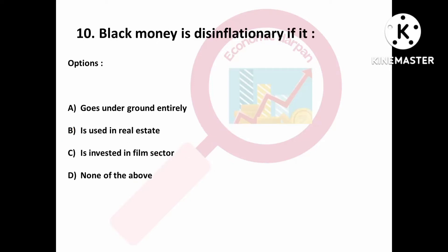Question number ten is: black money is disinflationary if it — Option A: goes underground entirely; Option B: is used in real estate; Option C: is invested in film sector; Option D: none of the above. Option A is the right one — it goes underground entirely.